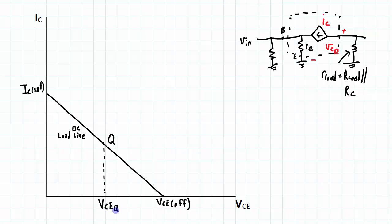which is half of VCE off. And here is ICQ, which is going to be half of IC sat. Then the AC load line represents how IC — the small-signal collector current — and VCE can change with respect to the Q operating point.